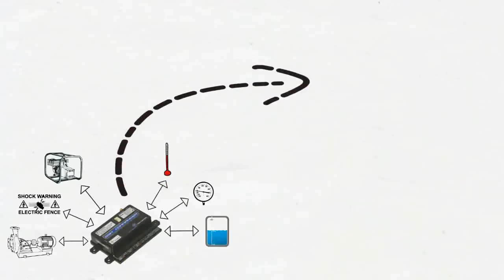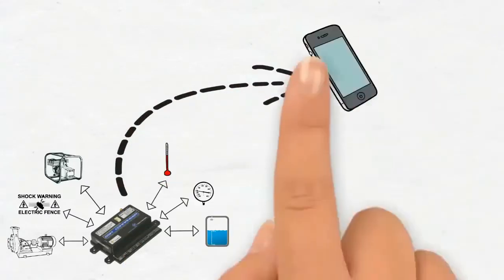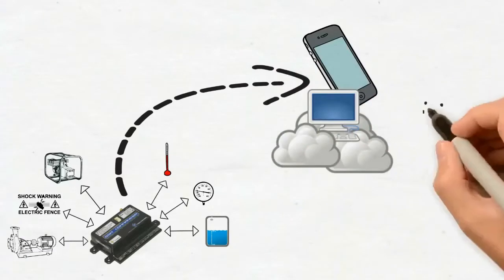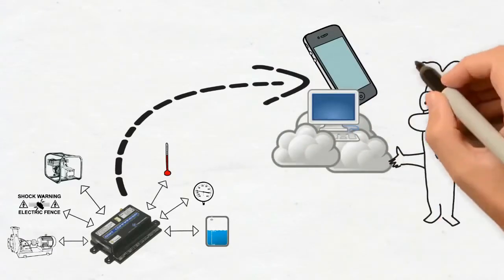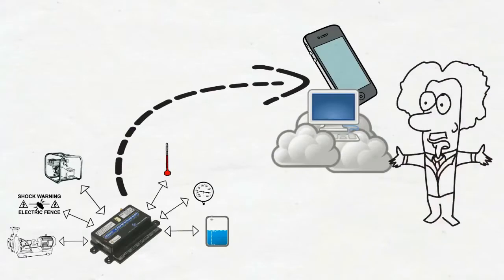The GSM Commander communicates from anywhere in the world, directly to your phone or to an internet server. This allows you to remotely monitor and control any installation from your phone or your browser.